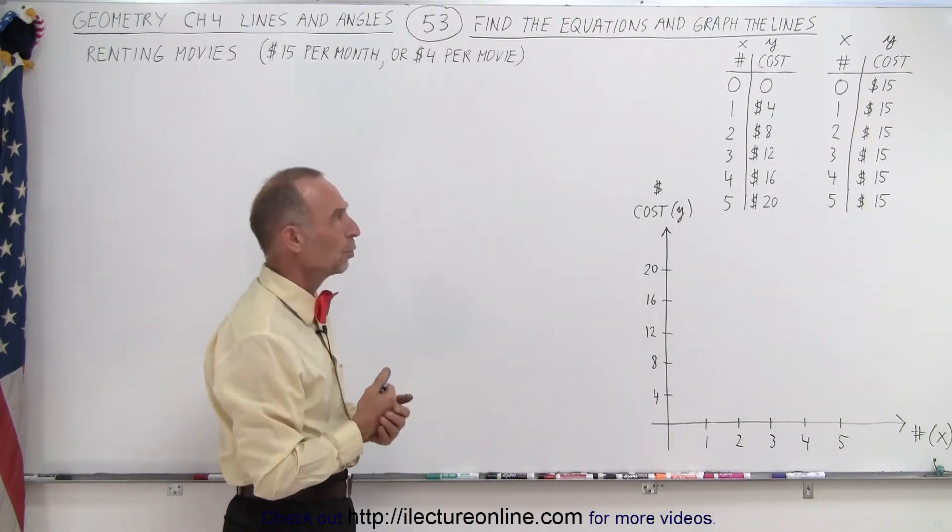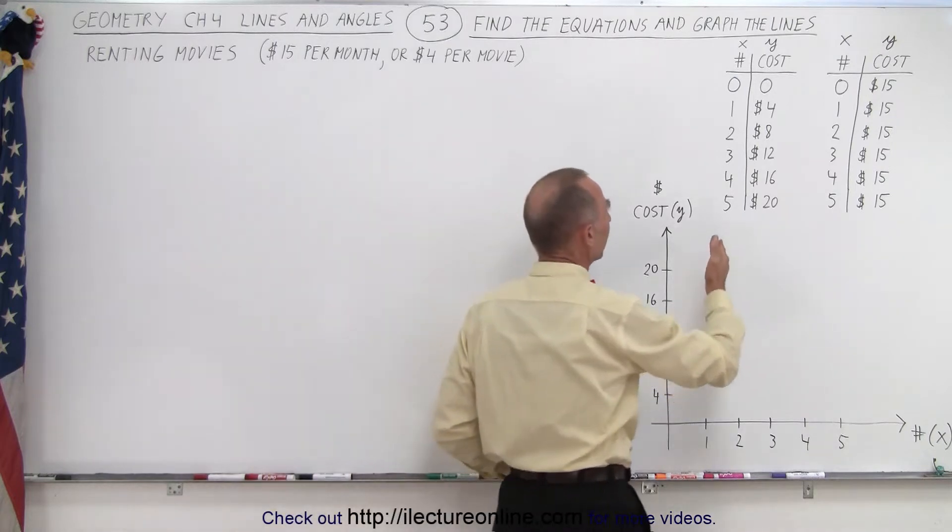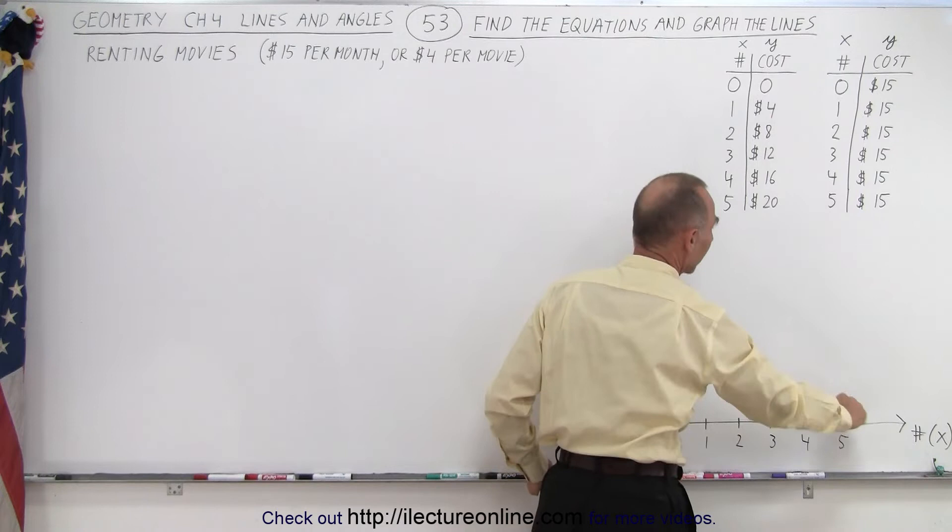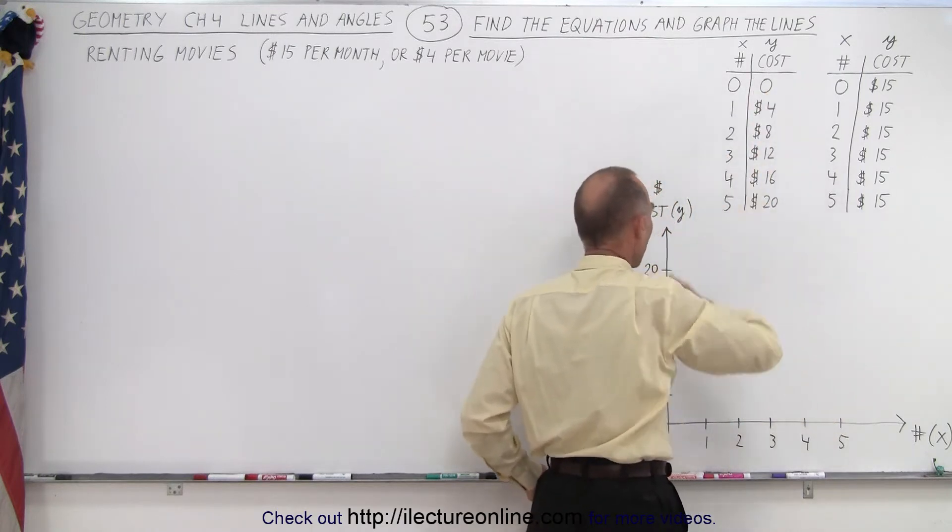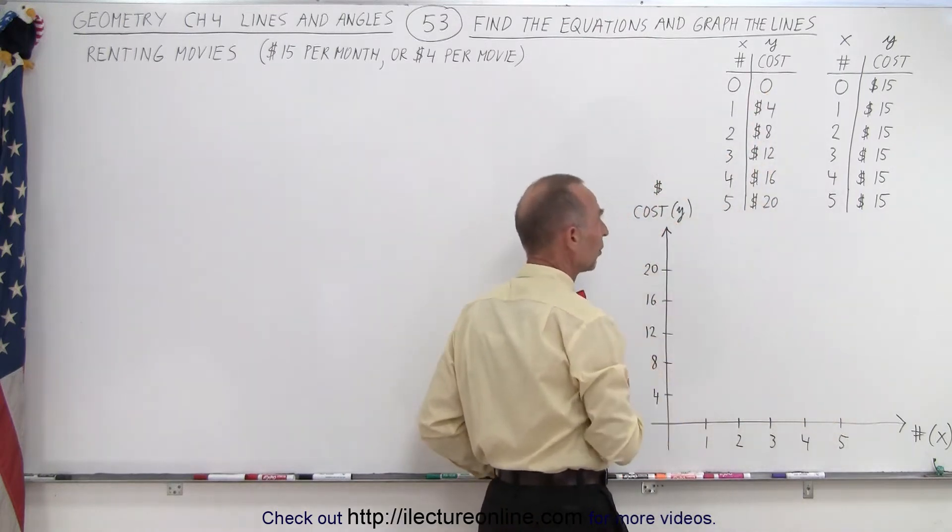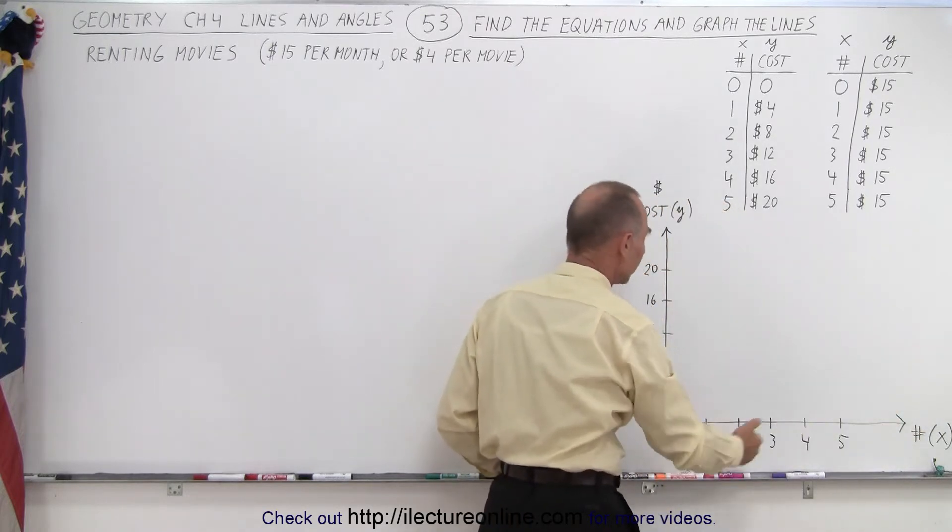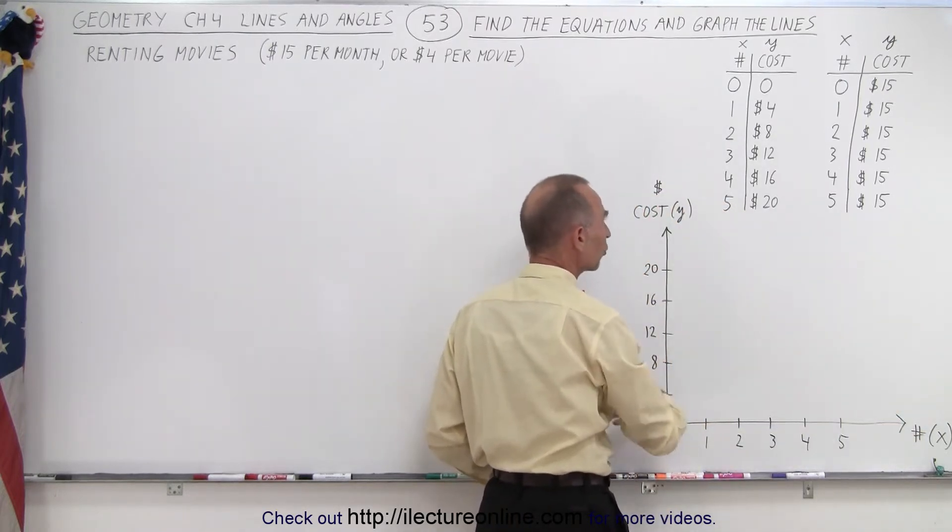Notice that we can assume that the column on the left here represents the x value on the horizontal axis, the column on the right represents the y or the vertical values. So on the horizontal axis we have quantity, number, on the vertical axis we have dollars or cost.